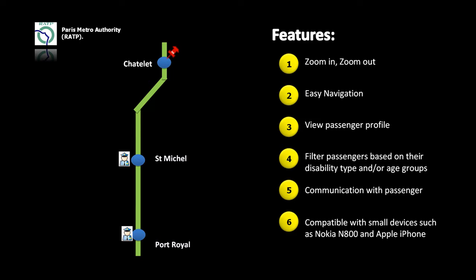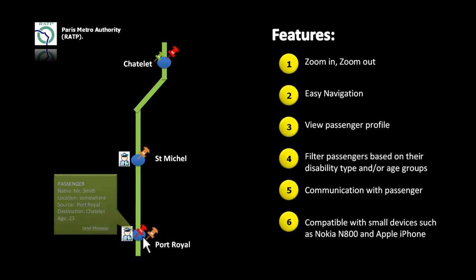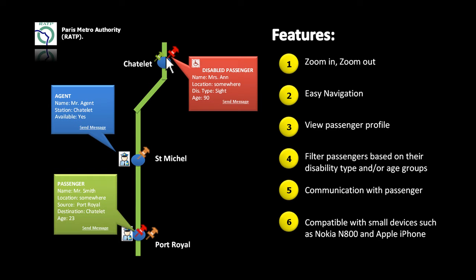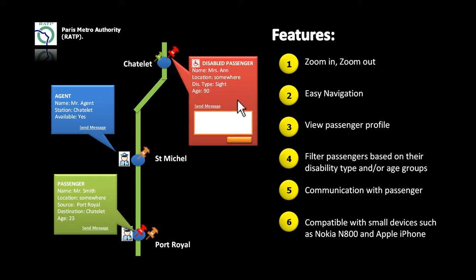Passengers are represented by pins of different colors which indicate disability types. Once you click on a pin, a pop-up window will show detailed user information. There is also the ability for the agent to send the passenger a message.